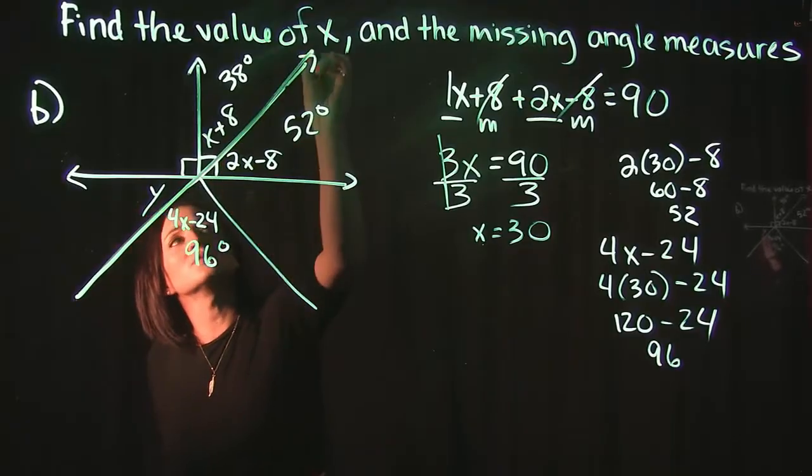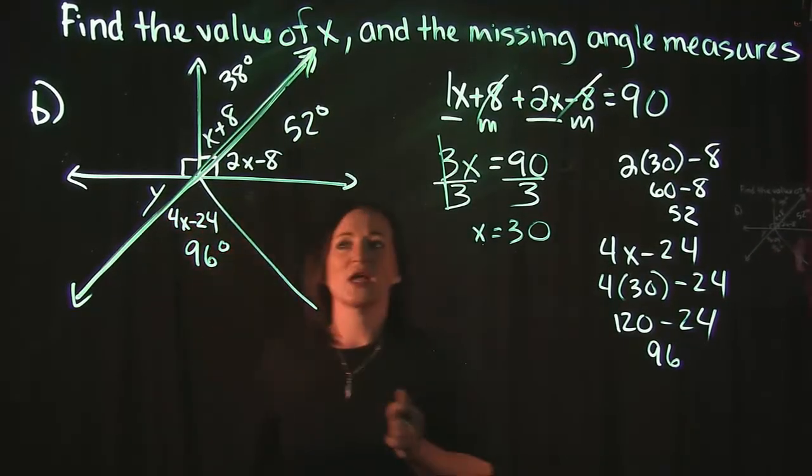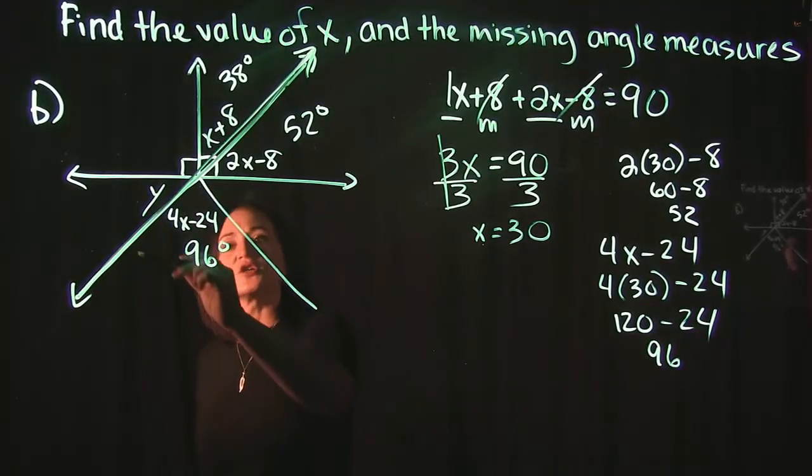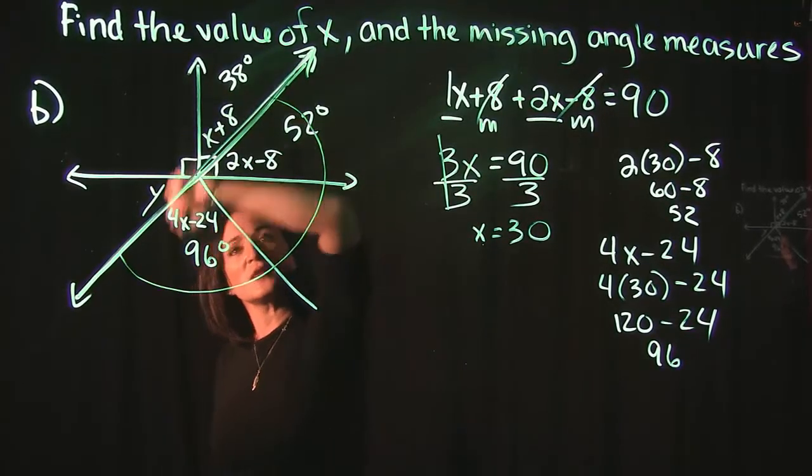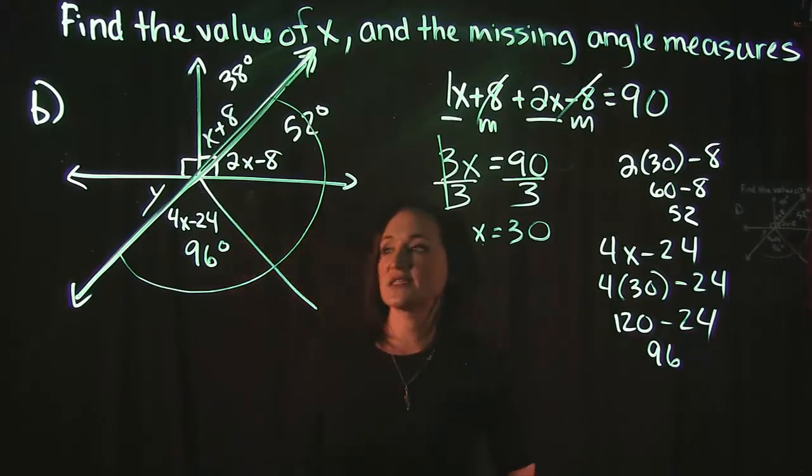But what I can kind of do here is I do have two straight angles. This is a straight angle, right? This line goes completely across. And what we know about straight angles is straight angles equal 180 degrees. So everything within this straight angle here is equal to 180 degrees.